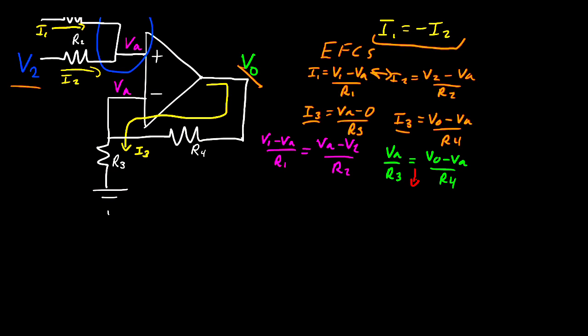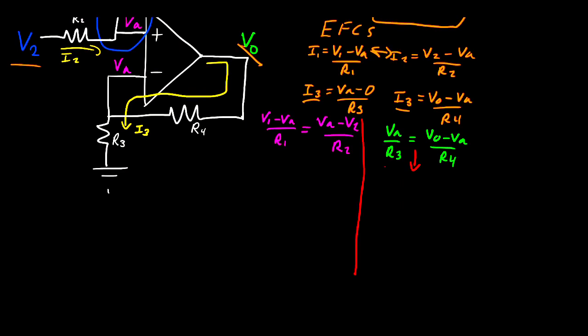Now let's take this equation and solve for VA. Let's start off with getting rid of these denominators and multiply everything by R3 and R4. This gives us VA R4 is equal to VO R3 minus VA R3.